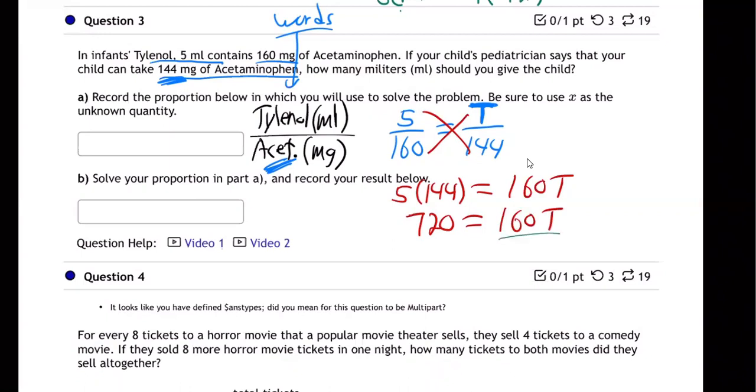Last step to solve for T. Divide by 160. And I'm getting 4.5. So 4.5.